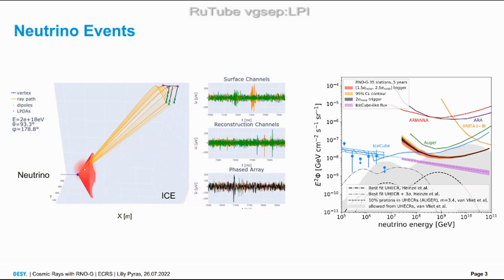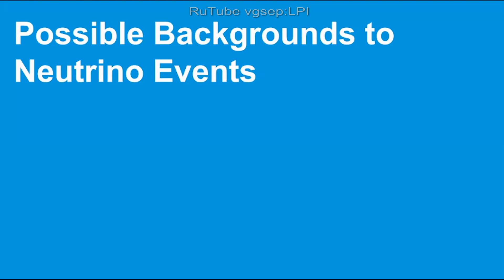This is our sensitivity prediction. You see that we not quite get the extended IceCube flux but we can cut into the area which is allowed from ultra-high cosmic rays. This is for five years of RNO-G.